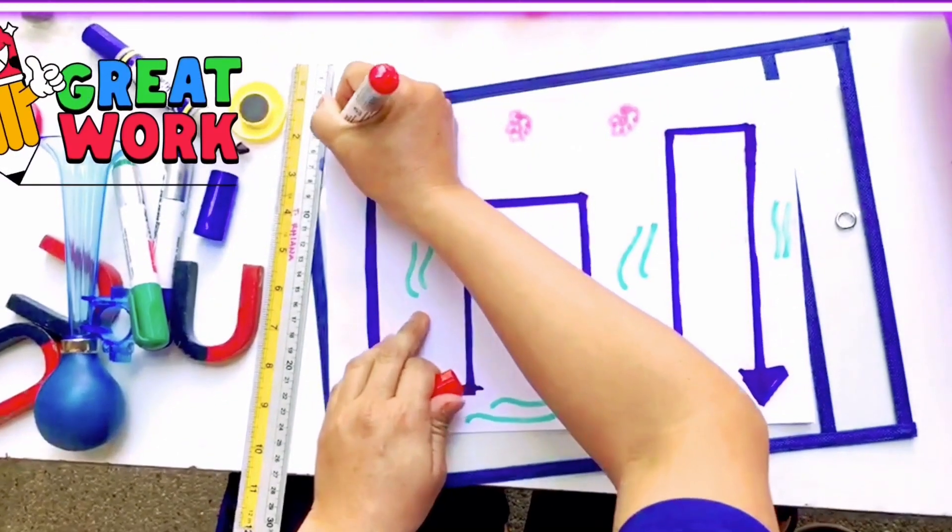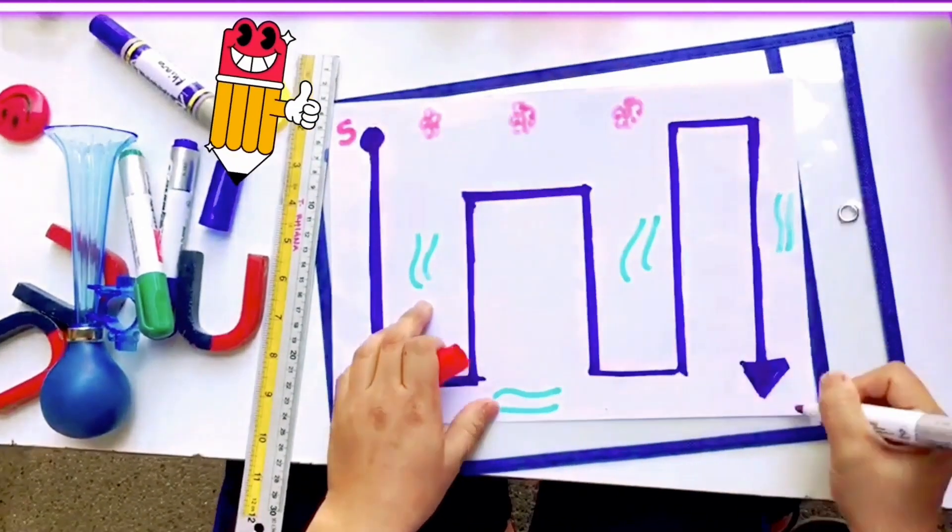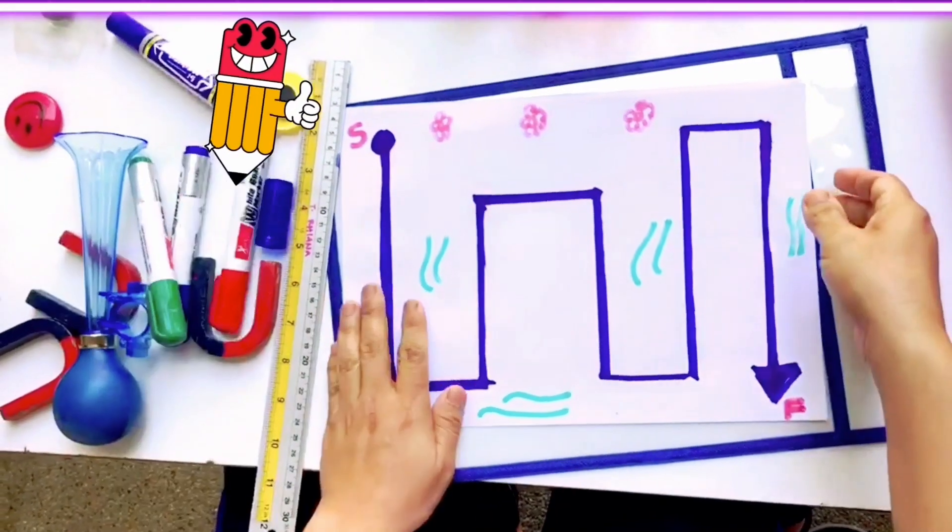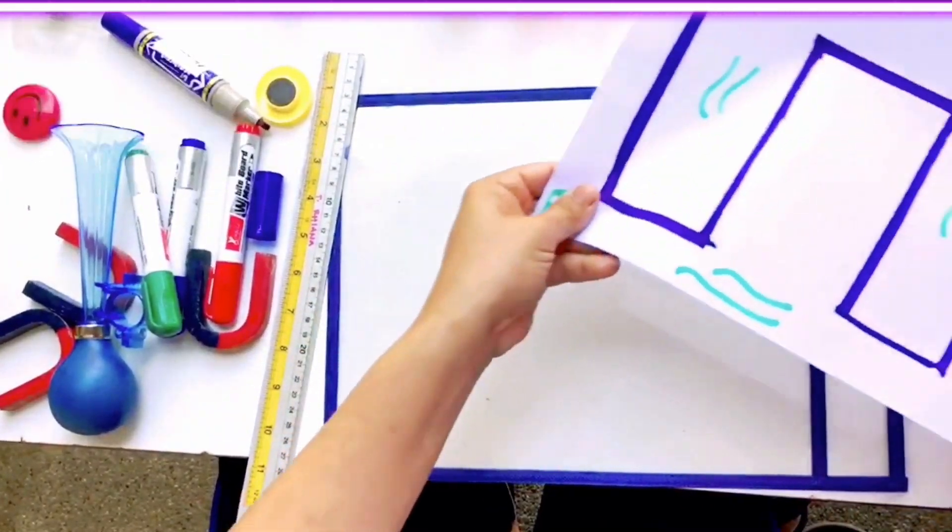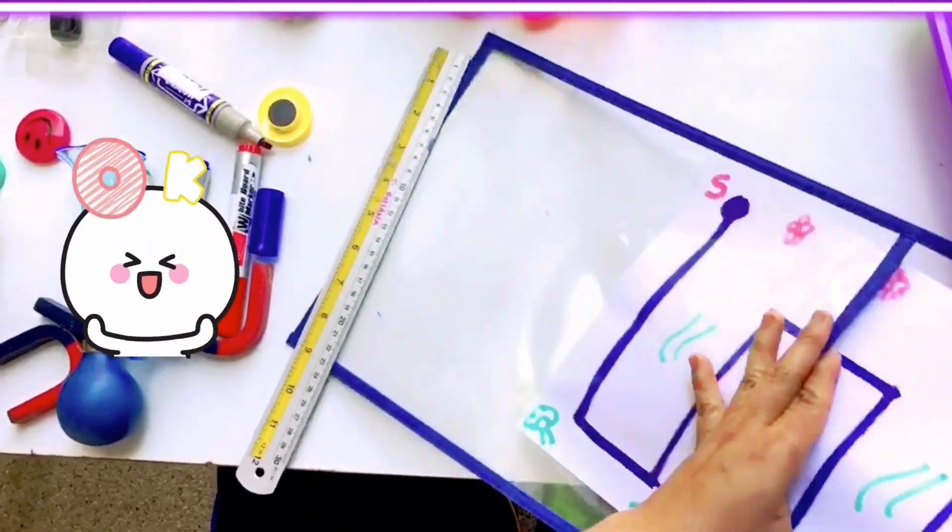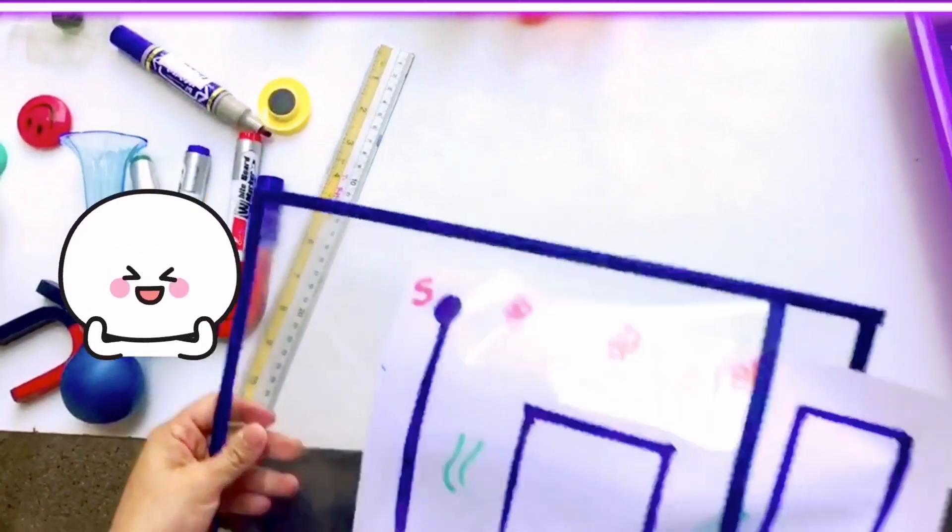Then we're done. So we have S here. So we will start here. And we have this one, F. Finish line. So you're going to put your drawing inside a dry erase pocket. Mommies, you can do this at home.